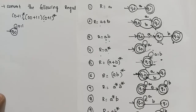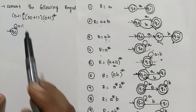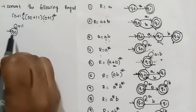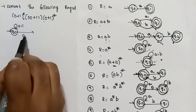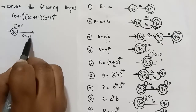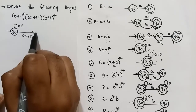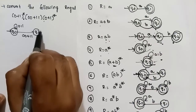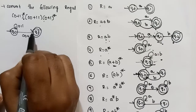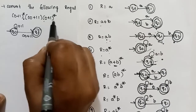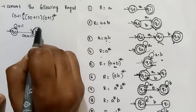We concatenate to 0, 0 plus 1, 1. So 0, (0 plus 1), 1 goes to Q1. Q1 is the final state. Here we have 0 plus 1 star again.